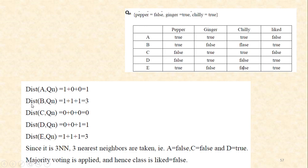Now we evaluate the distance between training tuple B and test tuple QN. For pepper, tuple B is true and QN is false — different, so distance = 1. For ginger, tuple B is false and QN is true — different, so distance = 1. For chili, both attribute values are different — so distance = 1. Therefore, the total distance between B and QN = 1 + 1 + 1 = 3, meaning the attribute values of B and QN are entirely different.